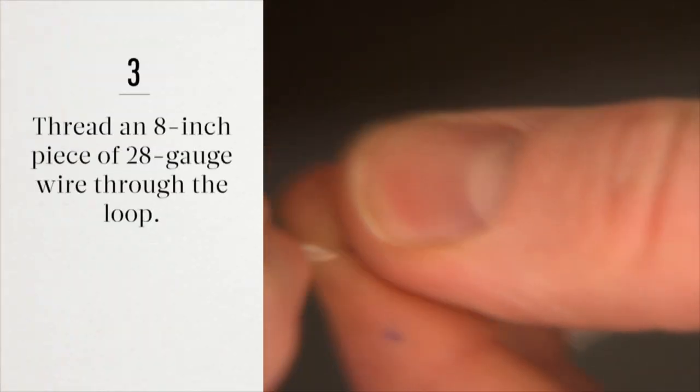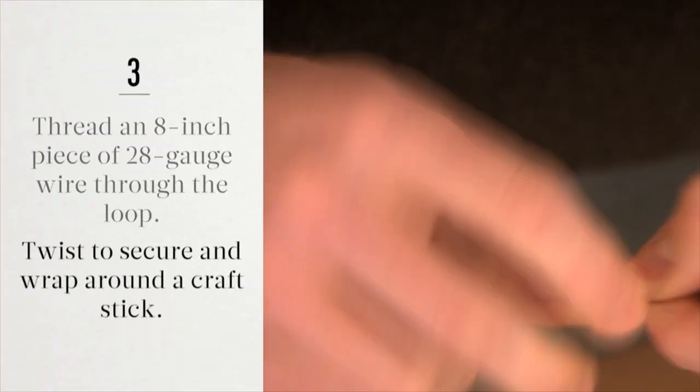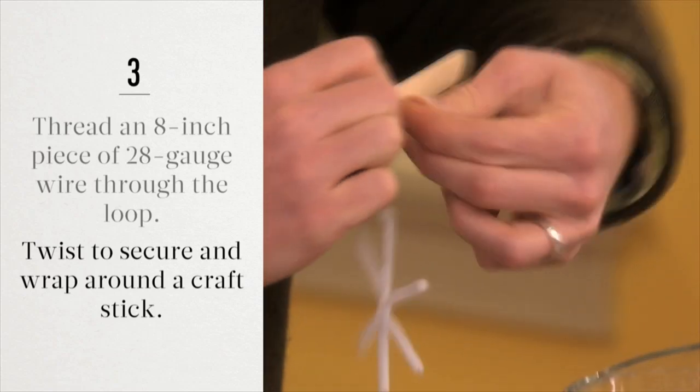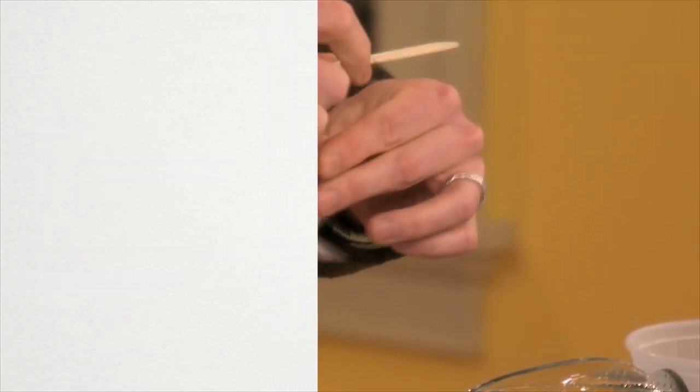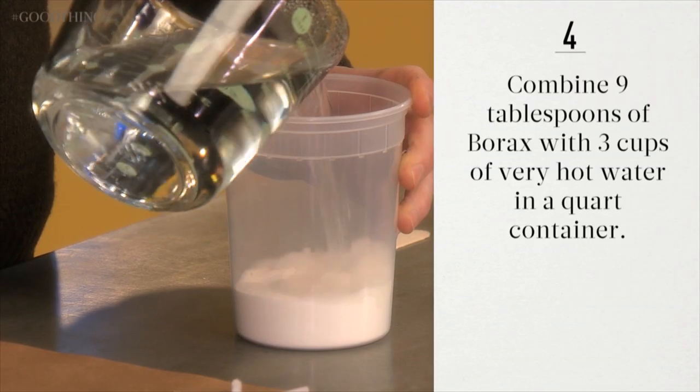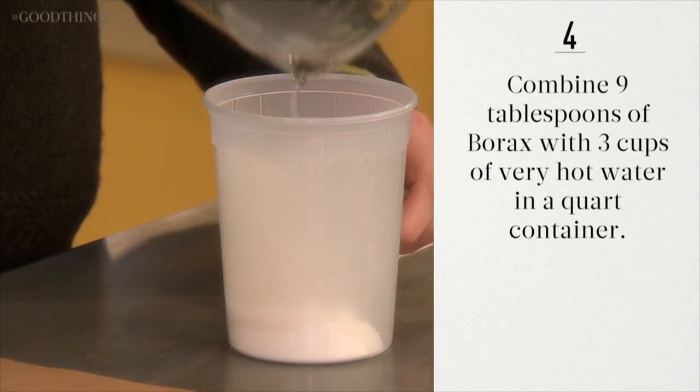Thread an 8-inch piece of 28-gauge wire through the loop, twisting to secure. Wrap the end of the wire around a craft stick and set aside. Combine nine tablespoons of borax with three cups of very hot water in a quart container.